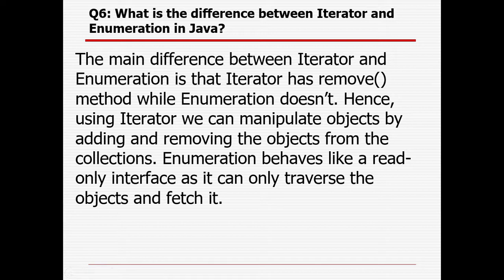What is the difference between iterator and enumeration in Java? The main difference is that iterator has a remove method, whereas enumeration does not. When using iterator, we can manipulate objects by adding, removing, or updating data. Whereas enumeration behaves like a read-only interface — it can only traverse objects and fetch data but cannot remove any data.